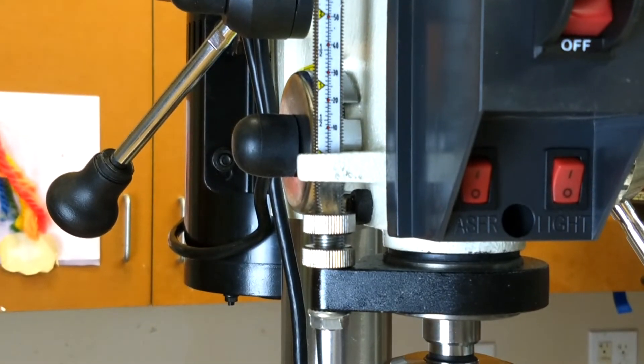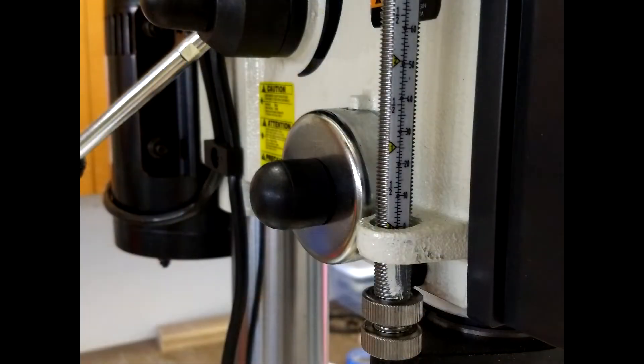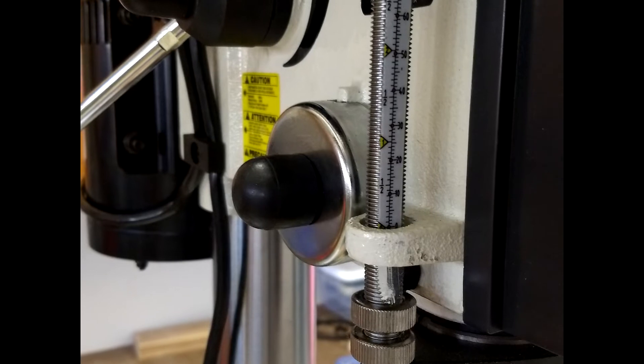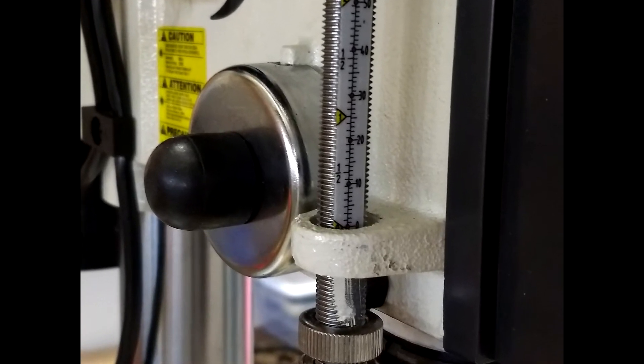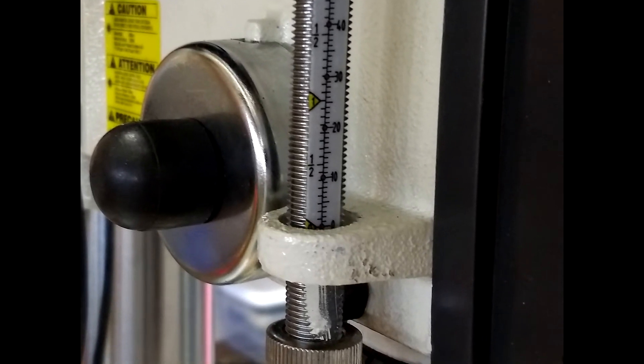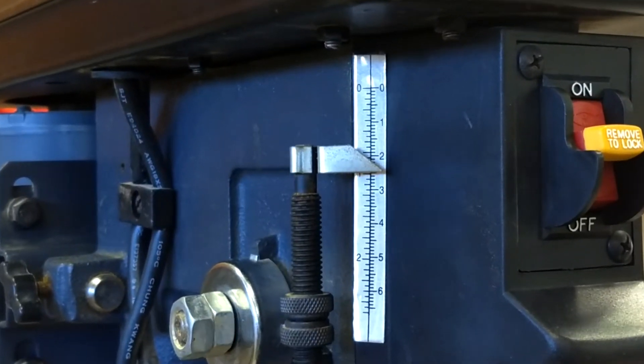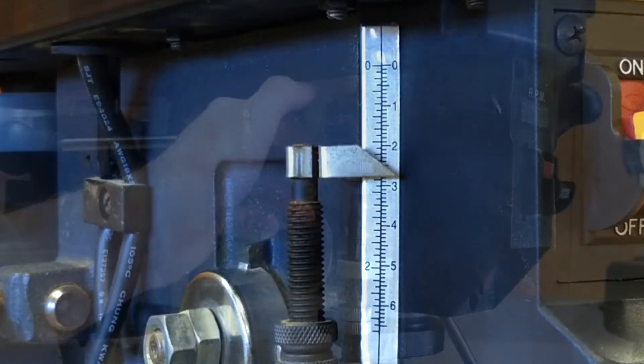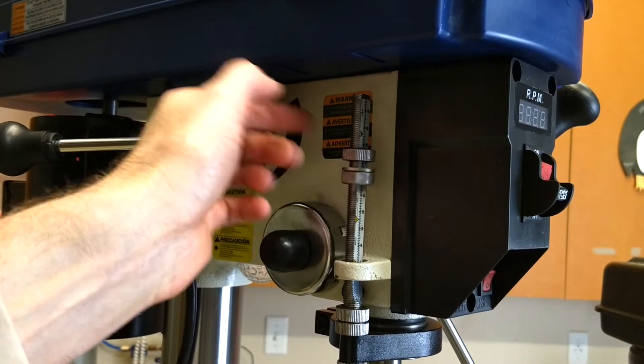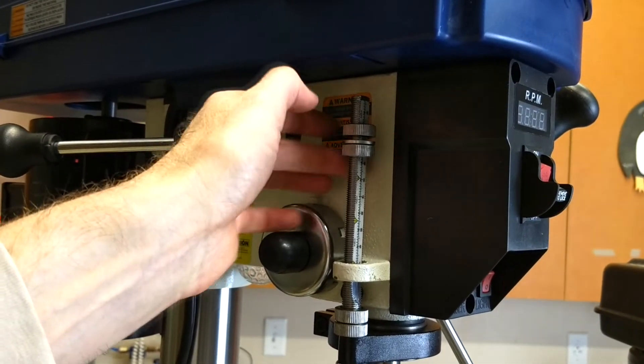The depth gauge was a bit of a disappointment. The quill zero indicator is the edge of the rough casting, so it's a bit tough to get an accurate reading without craning your head. I would have rather they put an arrow cursor or something easier. Adjusting the gauge stops is straightforward. You just thread some nuts up or down. It's not particularly innovative, but it does get the job done.